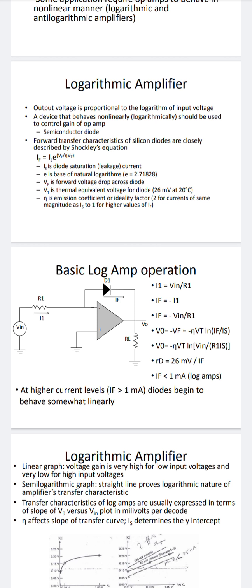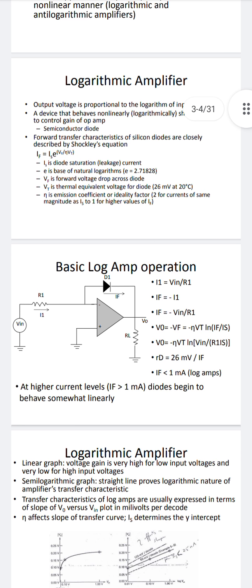The Shockley equation is used here: I_F equals I_S times e raised to V_F divided by eta times V_T. Here, I_S is the diode saturation current, e is the base of the natural logarithm (approximately 2.71827), V_F is the forward voltage drop across the diode, V_T is the thermal equivalent voltage, and eta is the proportionality constant. This governs the working of the logarithmic amplifier.